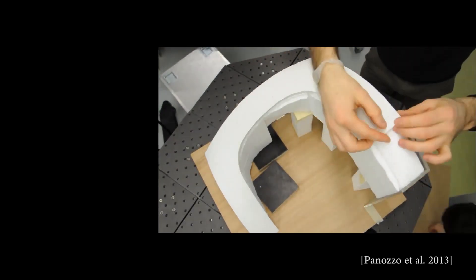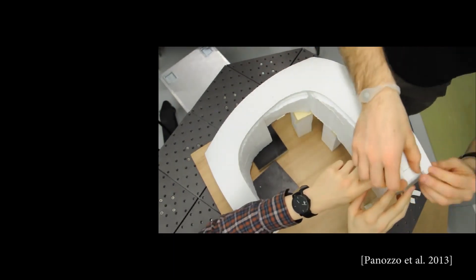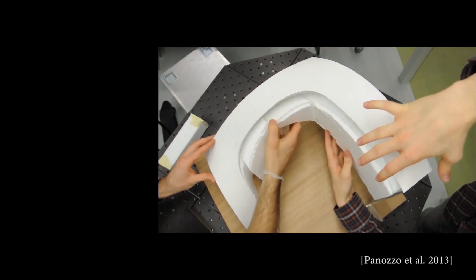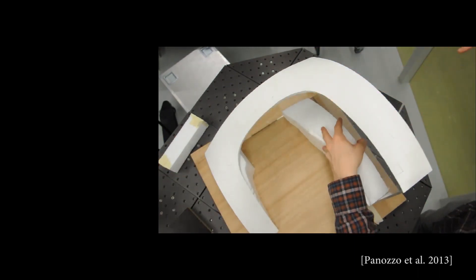Currently self-supporting structures are built using a dense formwork which supports the structure until all its pieces are in place. The formwork is removed after the structure is completed.